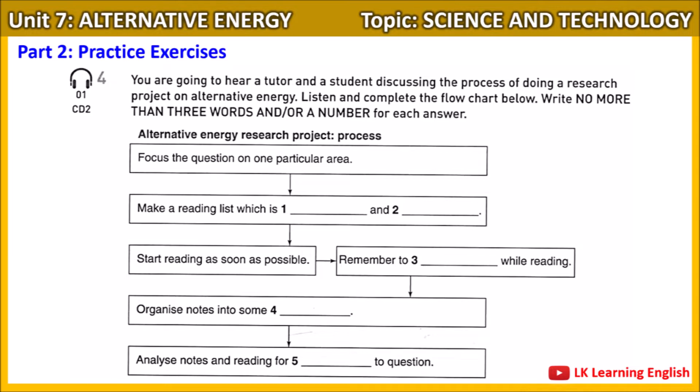Well, the first thing you do is to make sure you focus your question, otherwise you'll have too much to read and you won't be able to select the key arguments. So how do I do that? Start with the general topic of alternative energy and then keep asking questions until you've narrowed the topic down to one particular area.